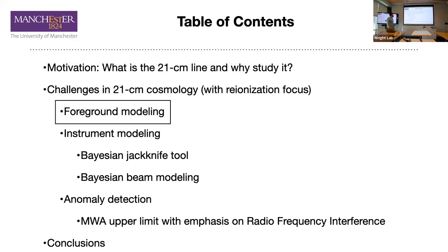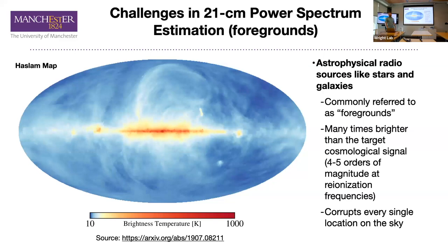Now I'm going to get into challenges, starting with foreground modeling. The problem with foregrounds is that they're really bright. This is a map of synchrotron radiation at 408 megahertz called the Haslam map, with brightness temperatures of anywhere from 10 to 1000 Kelvin at 400 megahertz. That's slightly higher frequencies than we use for reionization, and the foregrounds are brighter at lower frequencies. The cosmic signal we're looking for is order millikelvin. So the intervening galactic and extragalactic emission is four to five orders of magnitude brighter than the target signal, and the only way to find it is if we can separate the target signal from the foregrounds.